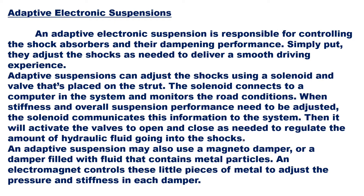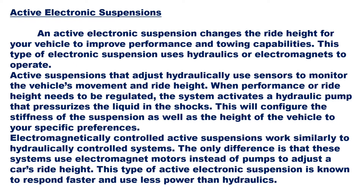An adaptive suspension may also use a magneto damper — a damper filled with fluid that contains metal particles. An electromagnet controls these little pieces of metal to adjust the pressure and stiffness in each damper. Overall, the sensors sense the status of the wheel and road condition, and then with the help of the solenoid and valves, we modulate the suspension system of the vehicle so that suspensions are effectively adjusted and the person inside doesn't feel the effect of bad road conditions.